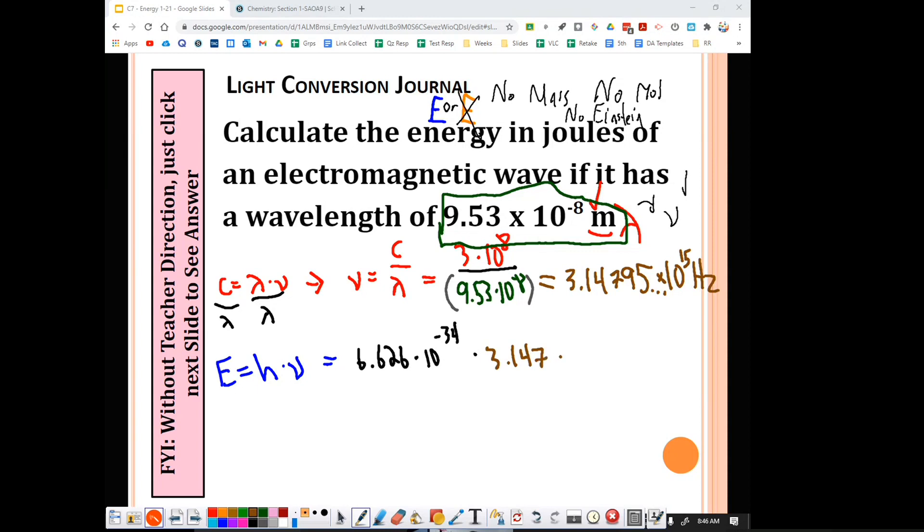So I take the number that's still in my calculator. I times it by 6.626 times 10 carat negative 34 equals. And I get my answer.